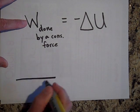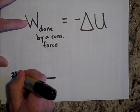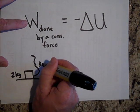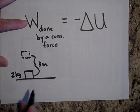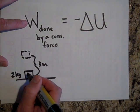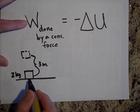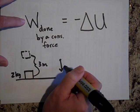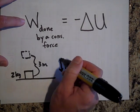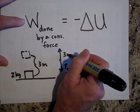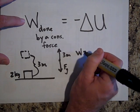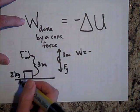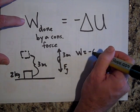Here is a crate — it's two kilograms. We're going to lift it up three meters to this spot right here. When I lift it up three meters, forget about the work I do. Let's talk about the work gravity does. On the way up, gravity is directed downward and the displacement is up three meters, so there's a 180-degree angle between them. The work done by gravity is 20 newtons times three meters, which is negative 60 joules.